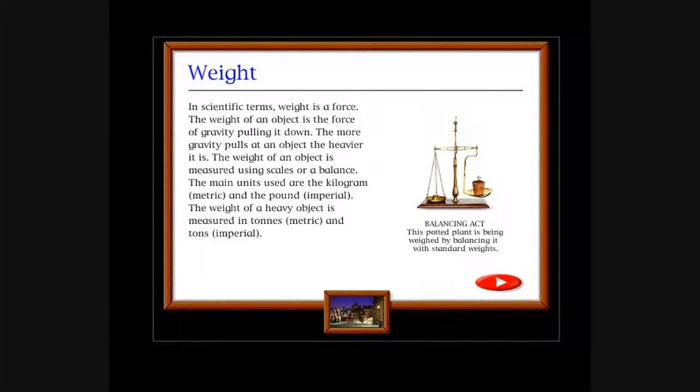Let me find this thing. What's this? Weight: In scientific terms, weight is a force. The weight of an object is the force of gravity pulling it down. The more gravity pulls at an object, the heavier it is. The weight of an object is measured using scales or a balance. The main units used are the kilogram (metric) and the pound (imperial). The weight of a heavy object is measured in tons. Balancing act: This potted plant is being weighed by balancing it with standard weights. You are weak, potted plant, you must grow to defeat it.